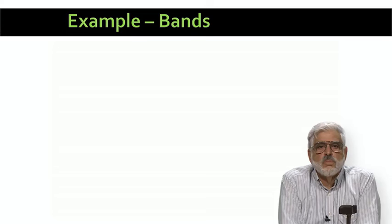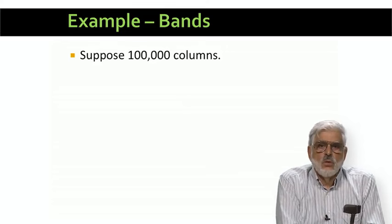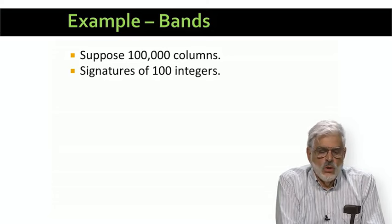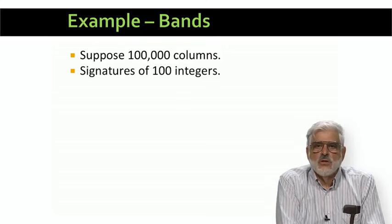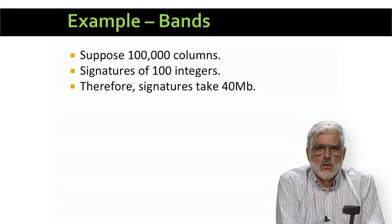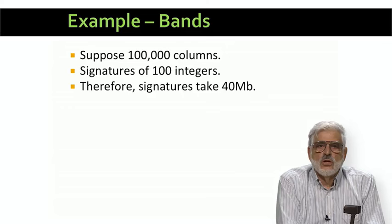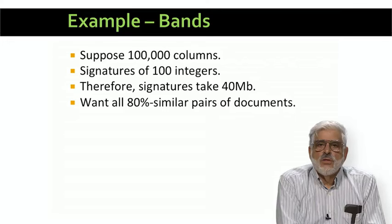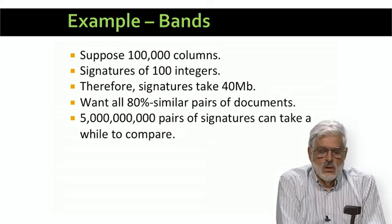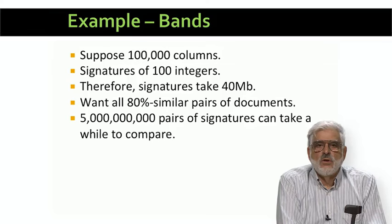Let's look at a particular example to get a feel for how probabilities of false positives and negatives work in practice. We assume 100,000 columns — we're looking for similar documents among 100,000 documents — and signatures of length 100, using 100 minhash functions. The signature matrix M is 100 rows by 100,000 columns. Assuming four-byte integer components, each signature takes 400 bytes and total space is 40 megabytes. The similarity threshold is 80%, meaning we consider signatures similar if they agree in at least 80 of their 100 components. There are approximately 5 billion pairs to compare, so we'd like LSH to avoid comparing them all.